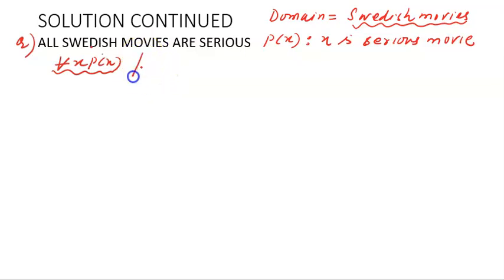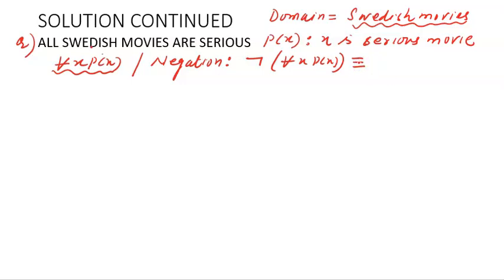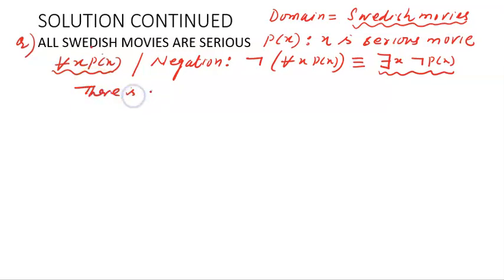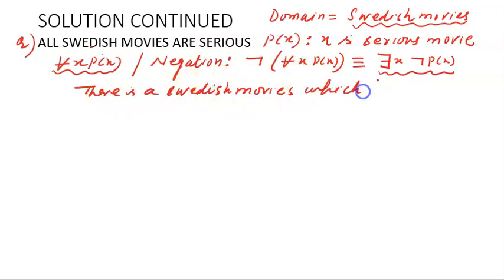The next part of this question is: what is the negation of this statement? The negation is: negation of [∀x P(x)]. Using the laws of equivalence, this is equivalent to there exists x, negation of P(x). Finally, translating into English: 'there exists x' means there is a Swedish movie for which negation of P(x) is true — meaning there is a Swedish movie which is not serious. This is the first way of solving the problem.